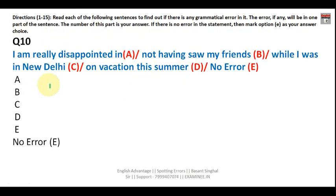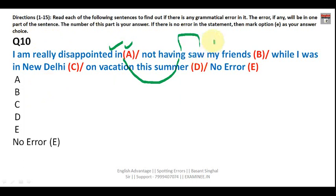Question ten: 'I am really disappointed in not having seen...' 'I am really disappointed' is correct. 'In' is correct and is followed by the '-ing' form. However, 'having' must be followed by the third form of the verb — 'seen' — giving 'having seen.' Your answer is B.